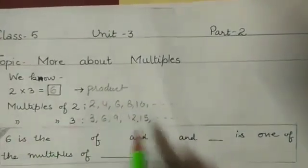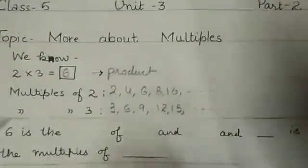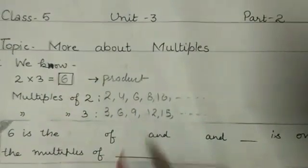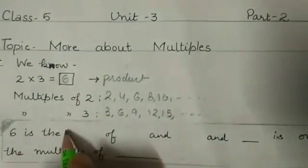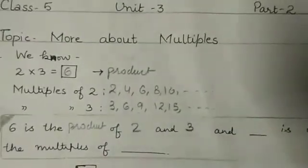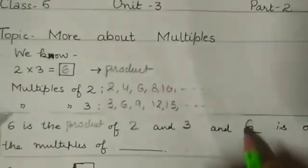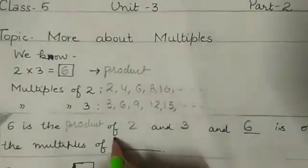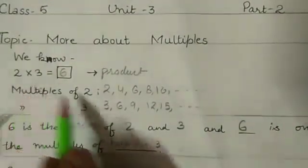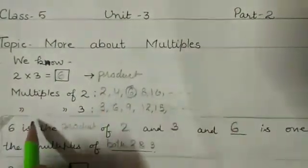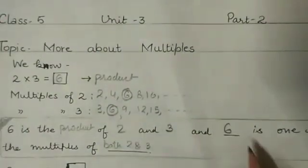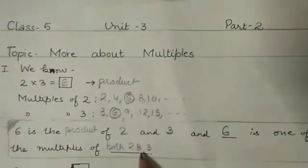Here I have written a few multiples. At least I could get the number 6 in both of these. Now what we observe: 6 is the product of 2 and 3, and 6 is one of the multiples of both 2 and 3. In multiples of 2 we are getting 6, in multiples of 3 again we are getting 6. So 6 is one of the multiples of both 2 and 3.